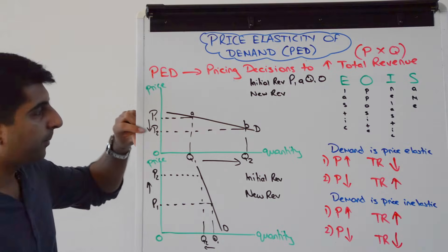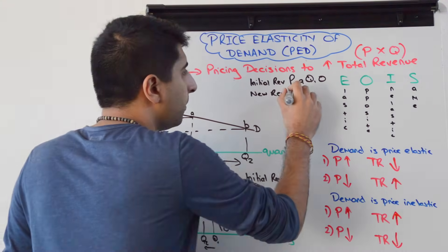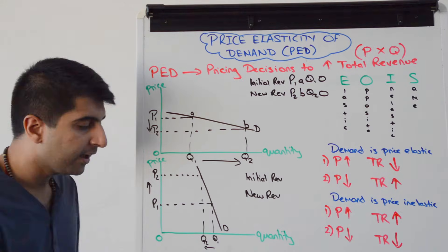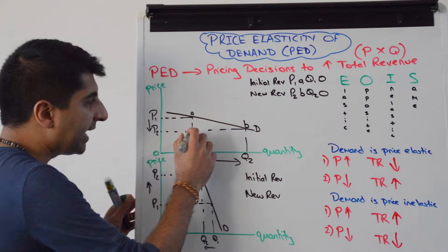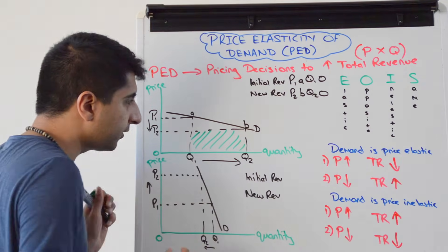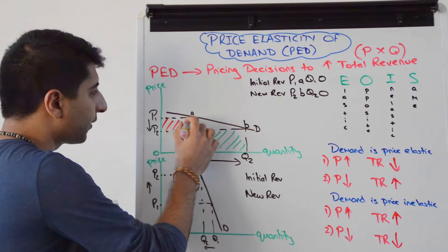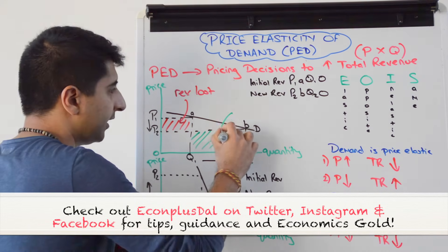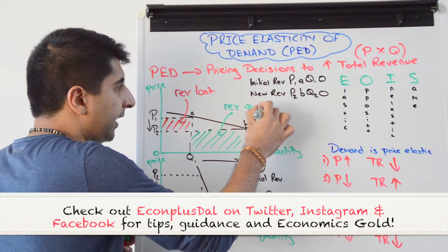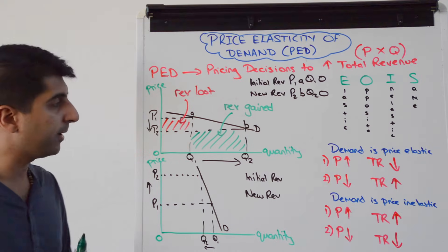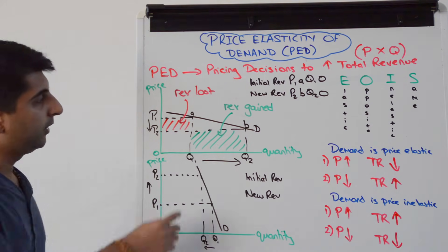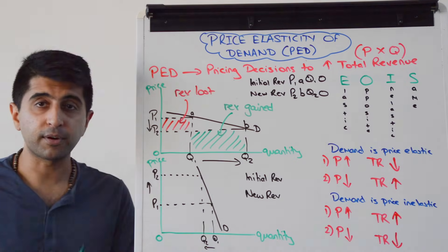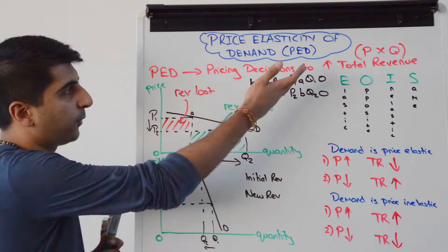The new revenue is P2 times Q2 — that's the area P2BQ20. To prove that revenue has gone up, we look at revenue gained versus revenue lost. The revenue gained is the green box, and the revenue lost is only the small red box. The green box is clearly much greater than the red box, so the revenue gain significantly outweighs the revenue lost. This confirms that reducing price when demand is price elastic is in the interest of producers when they want to increase their total revenue.